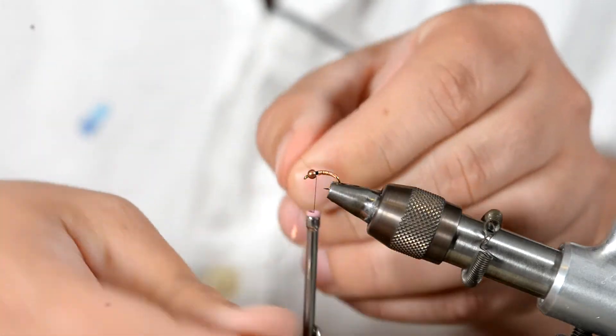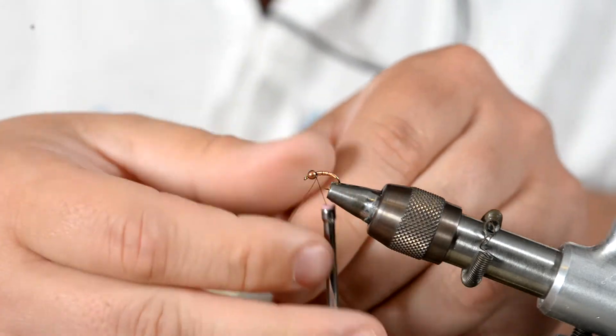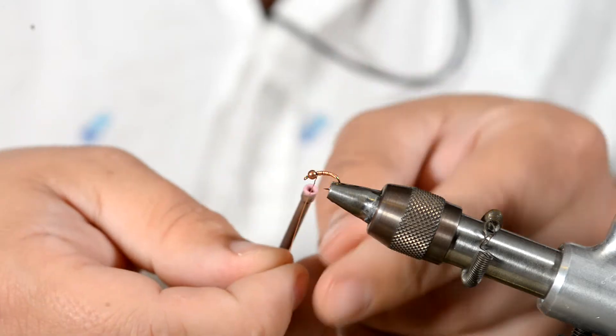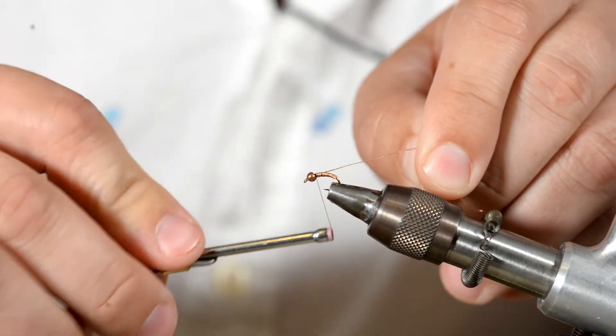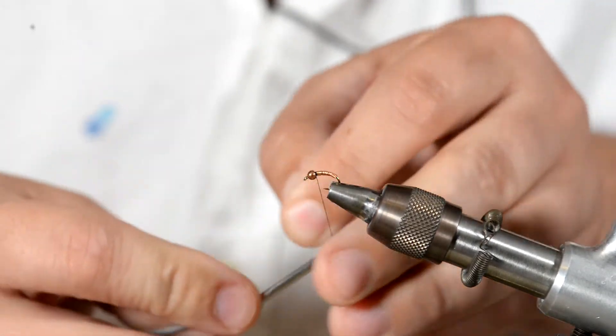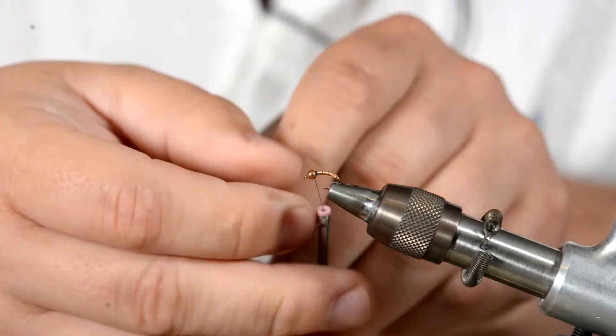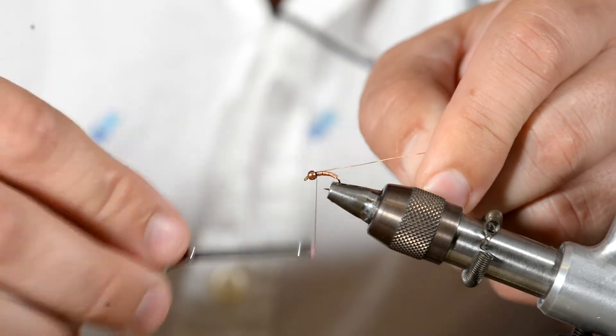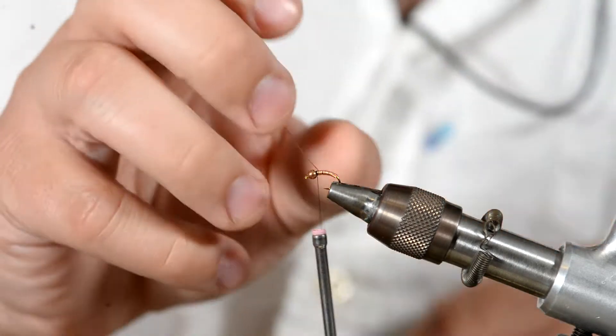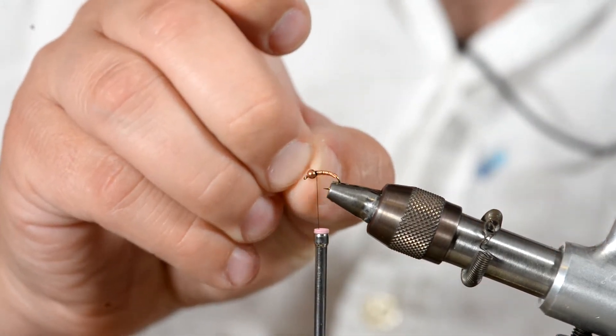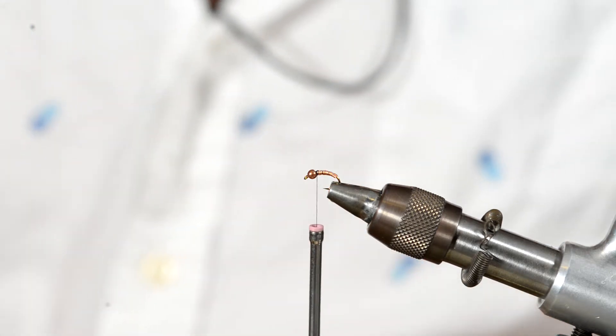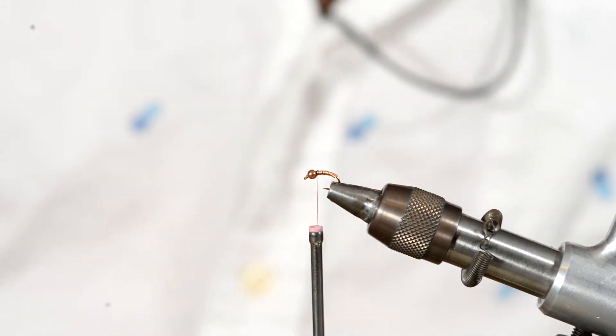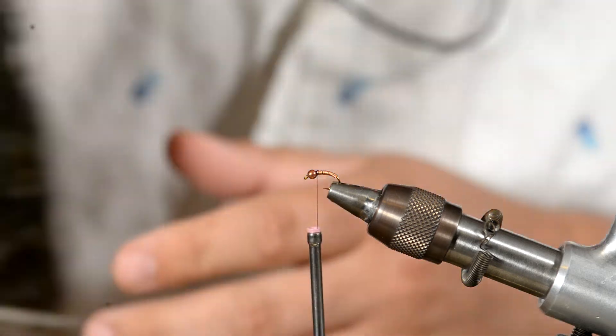Once you've brought it up to the bead on the hook, tie it off. I give it two wraps around the wire to tie it in. Give it a few thread wraps and then I do two more wraps around the wire to really secure it in. Once you have your wire secured in, get rid of the excess by helicoptering it off. I don't like to use my scissors because it will dull your scissors over time.